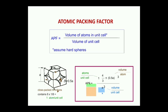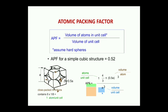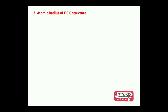For the simple cubic structure with 1 atom per unit cell, APF = 1 × (4/3 π r³) / a³. Substituting r = 0.5a gives APF = 0.52. This means 52 percent of the space is occupied by atoms in the simple cubic structure, and the remaining 48 percent is vacant. Around 50% space is occupied, making simple cubic a relatively soft structure in nature.